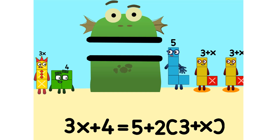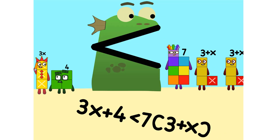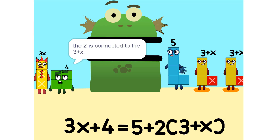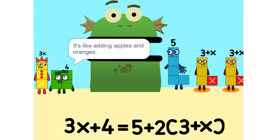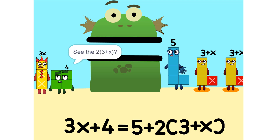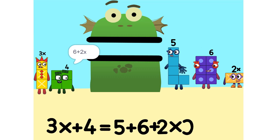I see something — we can add these. Why did that happen? Because the 2 is connected to the 3 plus x. So it's like adding apples and oranges. See the 2 times 3 plus x? That's the same as 2 times 3 plus 2 times x, which is 6 plus 2x.